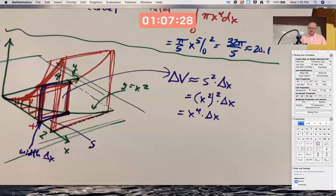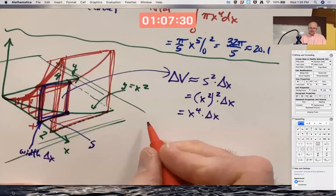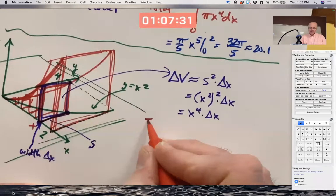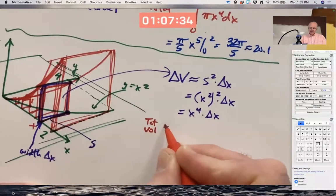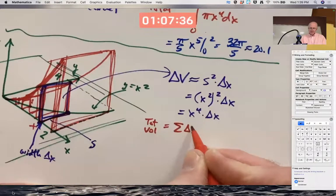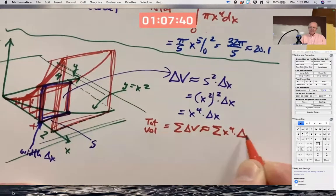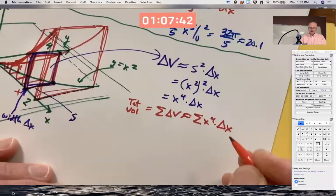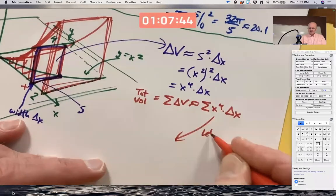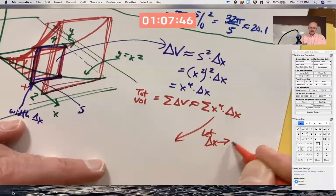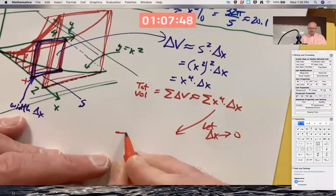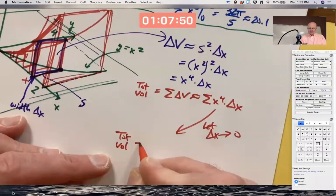There's my volume, small volume of the thin slice. So the total volume of the solid is the sum of the small volumes, which will be approximately the sum of things like this, which are Riemann sums for a certain integral. I now let delta X go to zero again and get a total volume. That can magically be found by an integral.